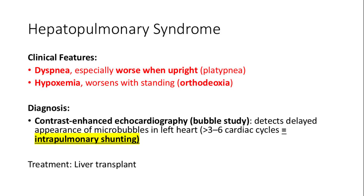To confirm the diagnosis, a contrast-enhanced echocardiography — also known as a bubble study — is performed. This test detects the delayed appearance of micro-bubbles in the left atrium after IV injection, typically appearing after more than three to six cardiac cycles, indicating intrapulmonary shunting. The definitive treatment for hepatopulmonary syndrome is liver transplantation, which can reverse the underlying pathology and improve oxygenation over time.